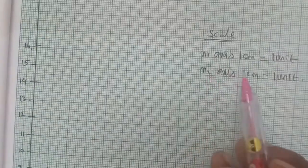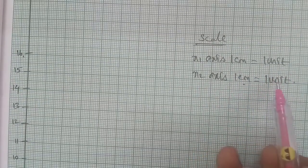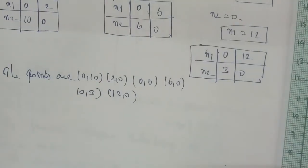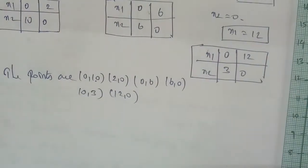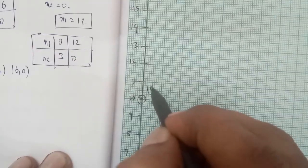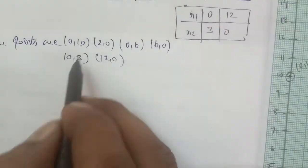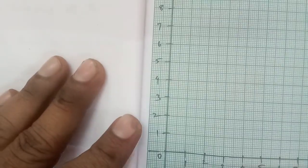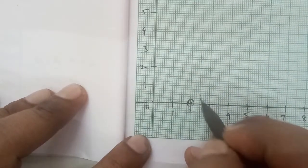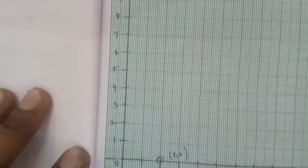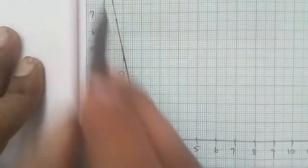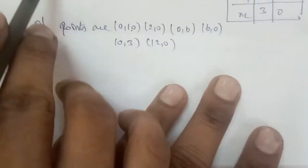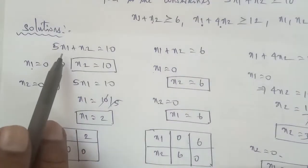On the graph, we plot point (0,10) and point (2,0) and join them. This represents the first equation 5x1 plus x2 equal to 10. The first line passes through points (0,10) and (2,0).